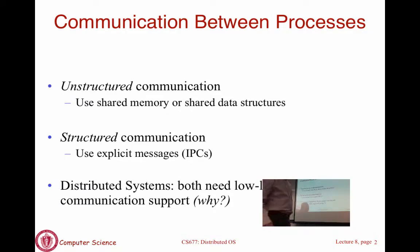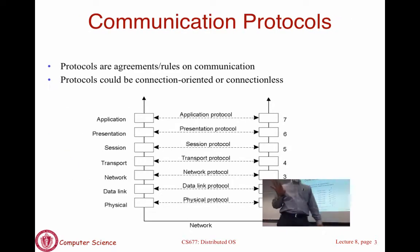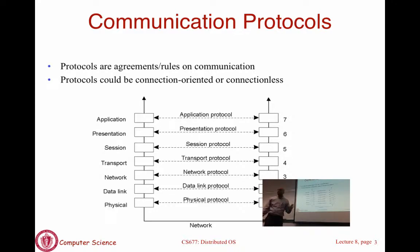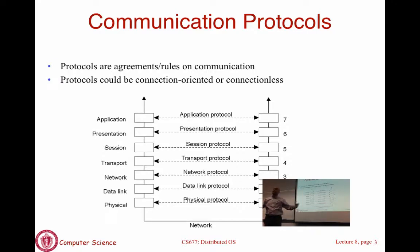Processes that use explicit communication or message passing will use some communication protocol — TCP/IP is an example. A protocol stack shows layers of protocols. Protocols are essentially rules for communication: an agreement between two parties on how to communicate. When you send a message to another party, the other party needs to know how to interpret that message — what fields it contains — and that is defined by the protocol itself.